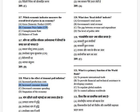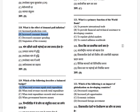What does a fiscal deficit indicate? The options are: government total assets, government total revenue, the gap between revenue and expenditure, and the level of public debt. The answer is the gap between revenue and expenditure.